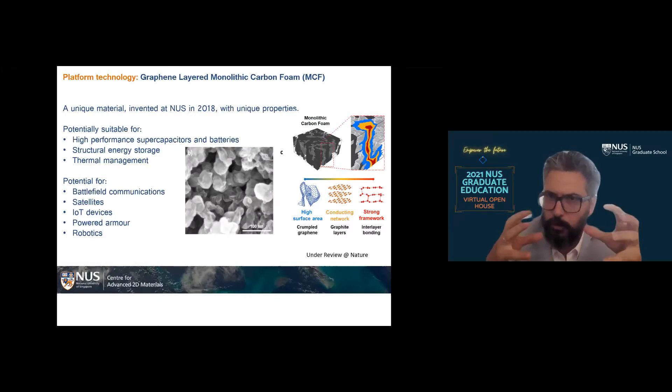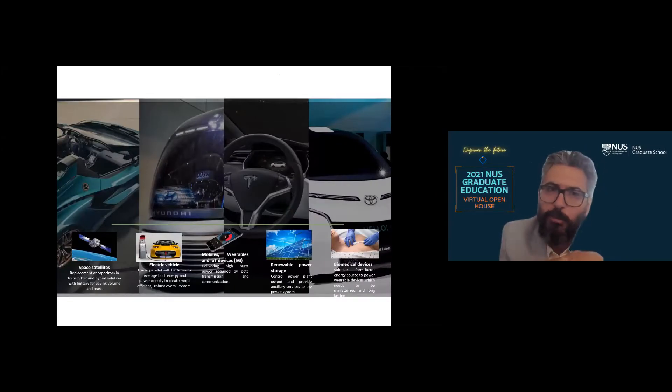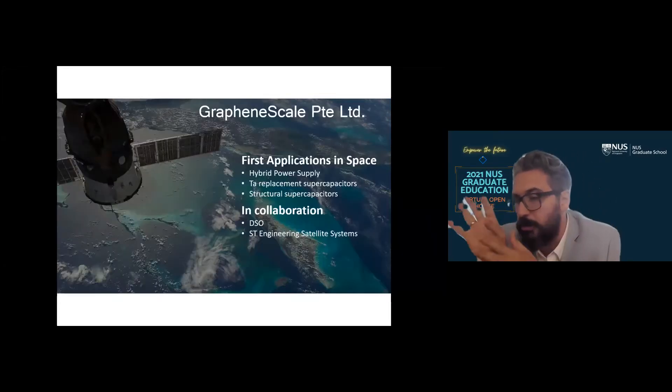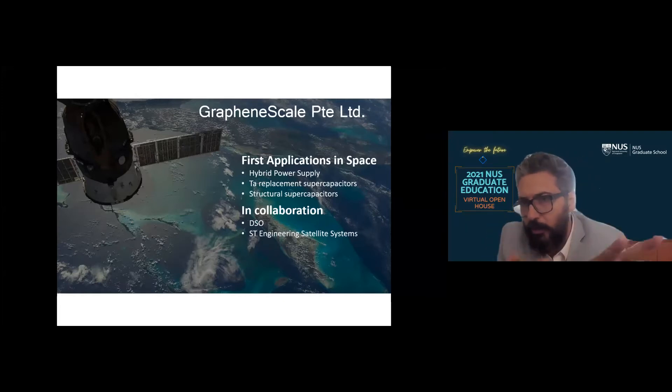The second area I want to mention is if you crumble graphene and you make it into a foam. A foam means there are a lot of channels which are interconnected, a lot of pores. You can actually use this type of graphene to make very sophisticated energy storage devices that we call supercapacitors. One area where supercapacitors are more and more important is in satellites or in the electric vehicle industry, because you need to always complement battery with a supercapacitor if you want to save weight. We are working with DSO and ST Engineering satellite systems to adopt this graphene technology for their specific energy modules to power their satellite.